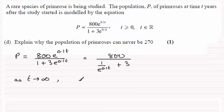So what we've got then is that p tends towards 800 on the top, and then we've got this divided by 0 plus 3. In other words, 800 divided by 3, which is 266.6 recurring.